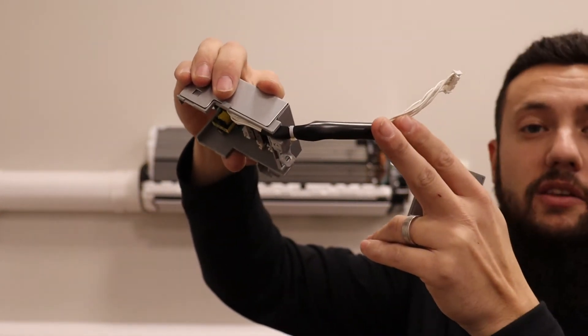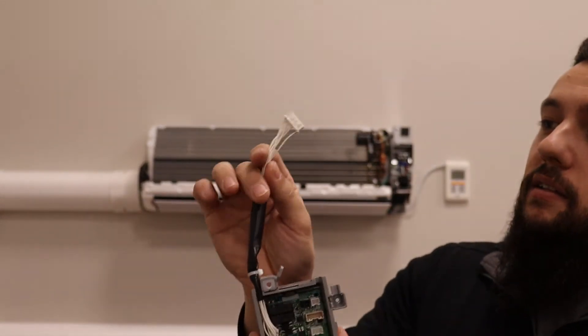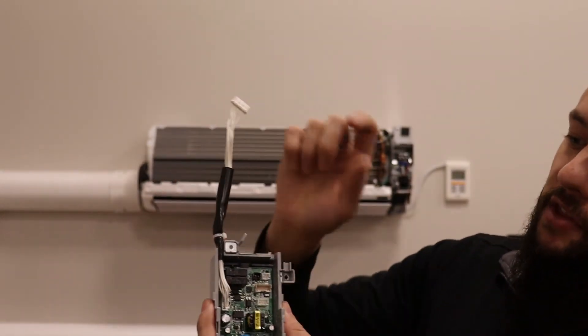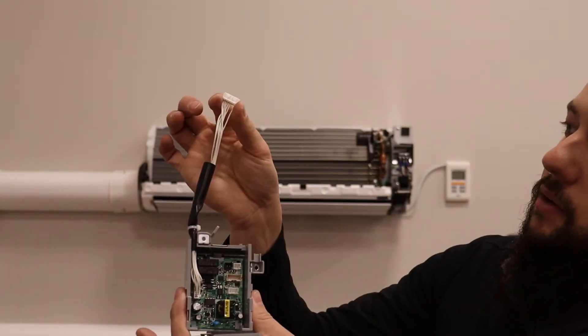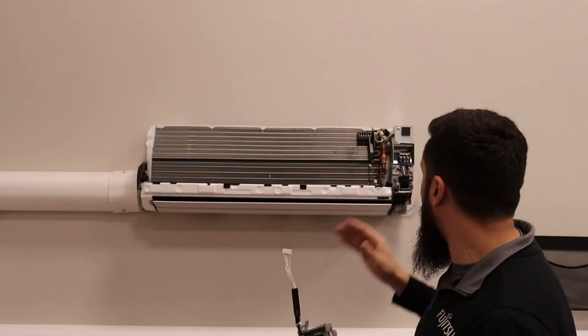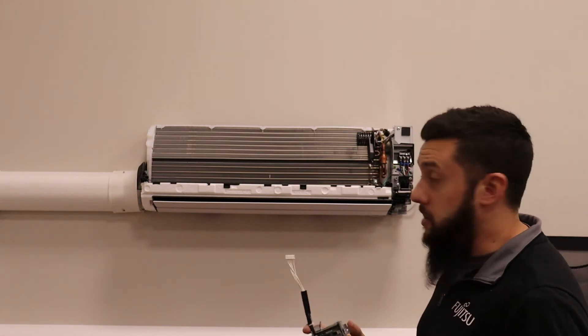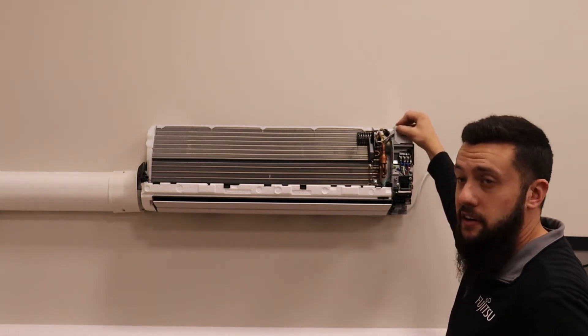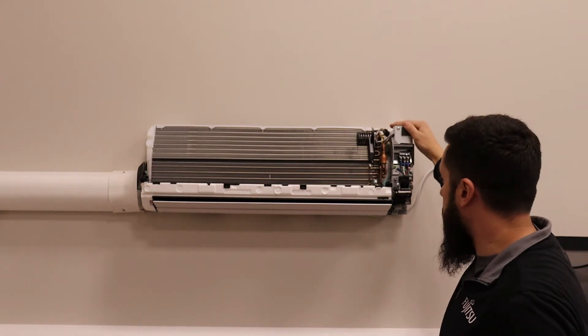This whip comes already on the unit, one end plugged in here, one end open here. This is going to plug into your existing control board up here. So what I'm going to do is I'm going to remove this cover and show you where this actually mounts inside the unit.